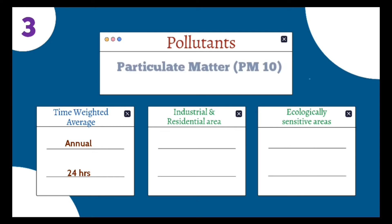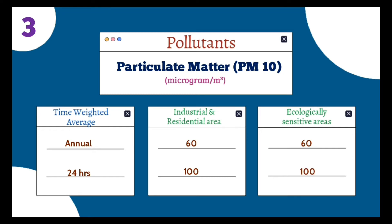The third pollutant is particulate matter PM10, and its unit is micrograms per meter cube. In industrial and residential areas, the annual value should not exceed 60 µg/m³, and the 24-hour value should not exceed 100 µg/m³. In ecologically sensitive areas, the annual value should not exceed 60 µg/m³, and the 24-hour value should not exceed 100 µg/m³.